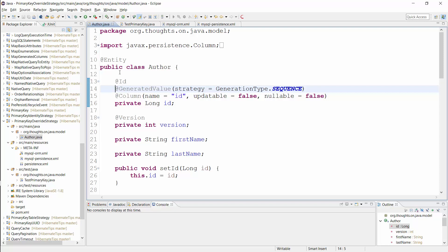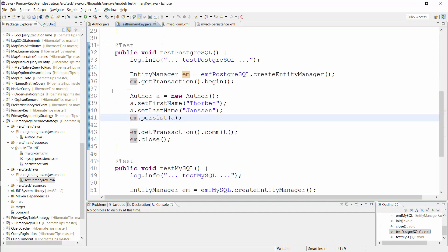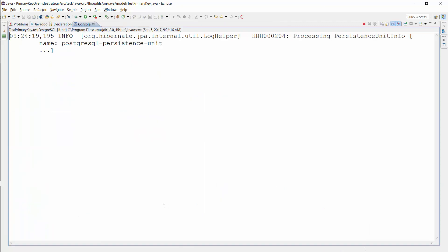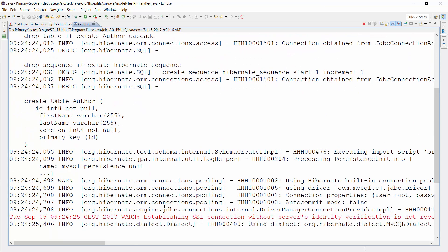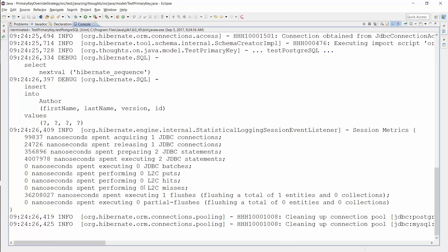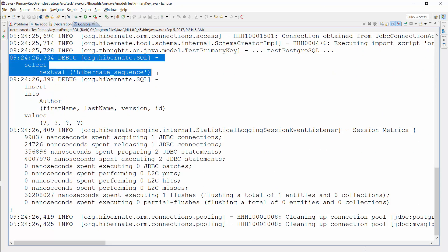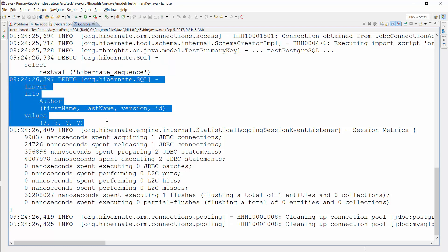When you now persist a new Author entity, as I do in this test case, Hibernate retrieves a new primary key value from the database sequence. You can see the SQL statements here. Hibernate first selects the primary key value from the sequence, before it inserts the new record into the Author table. That's the best approach for most applications.